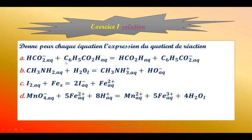Pour la première équation, toutes les substances sont solubles. Deuxième équation, on a l'eau qui n'intervient pas. Troisième équation, on a le fer solide qui n'intervient pas dans l'expression des quotients de réaction. Et pour la quatrième équation, on a l'eau qui ne va pas intervenir, alors que les autres substances interviennent dans l'expression des quotients de réaction.